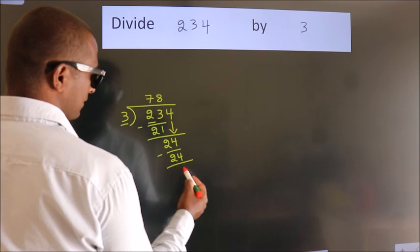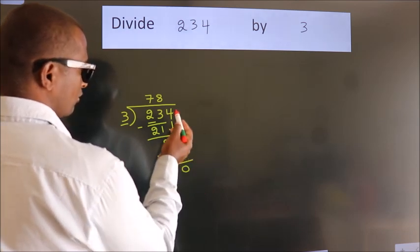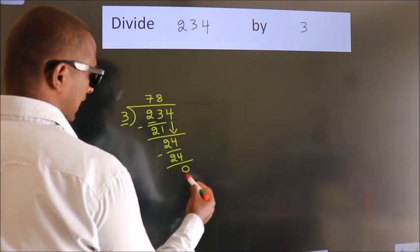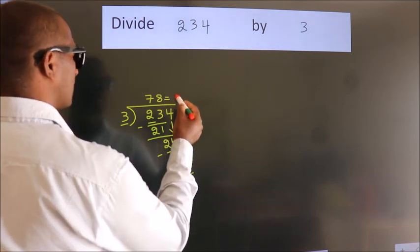Now we subtract and get 0. After this, there are no more numbers to bring down, and we got remainder 0. So this is our quotient.